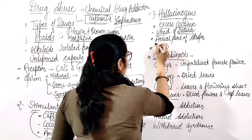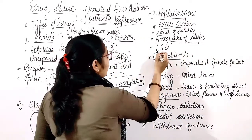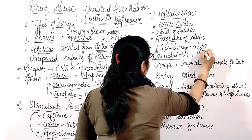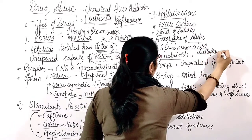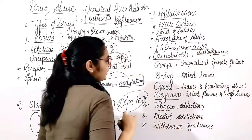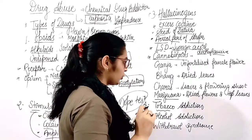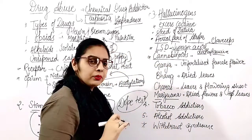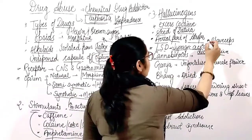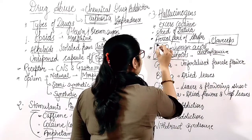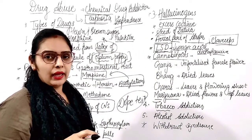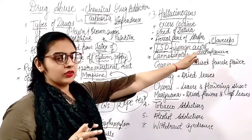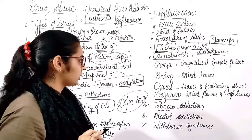Seeds of dhatura and the aerial parts of atropa belladonna are hallucinogens. Then LSD, which is lysergic acid diethylamide. Lysergic acid is produced by a fungi called claviceps purpurea, which is an ascomycetes. This can be asked in exams: expand LSD.